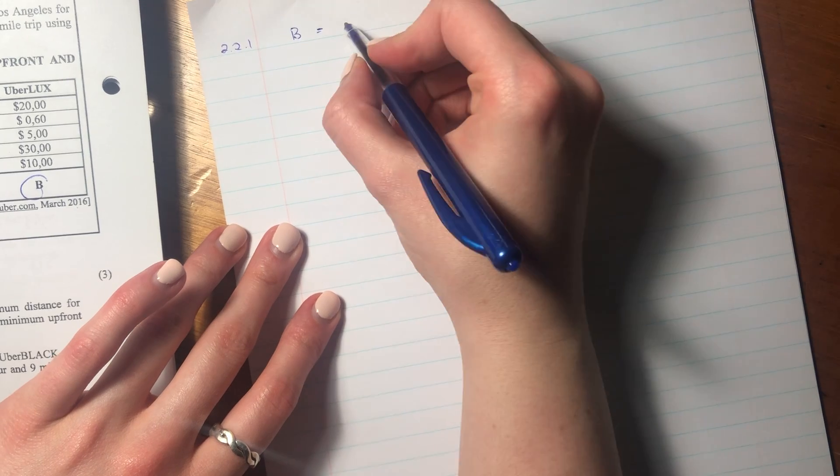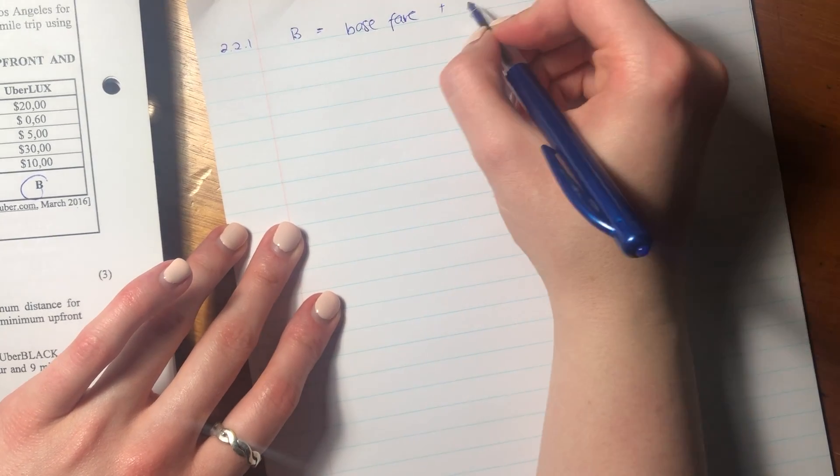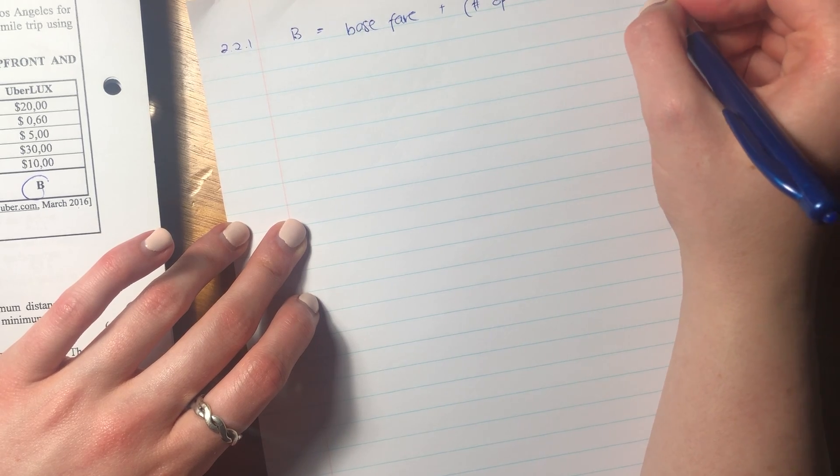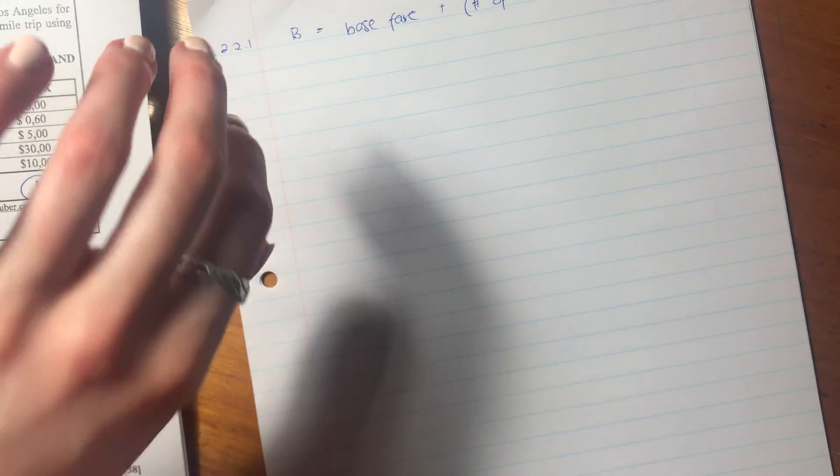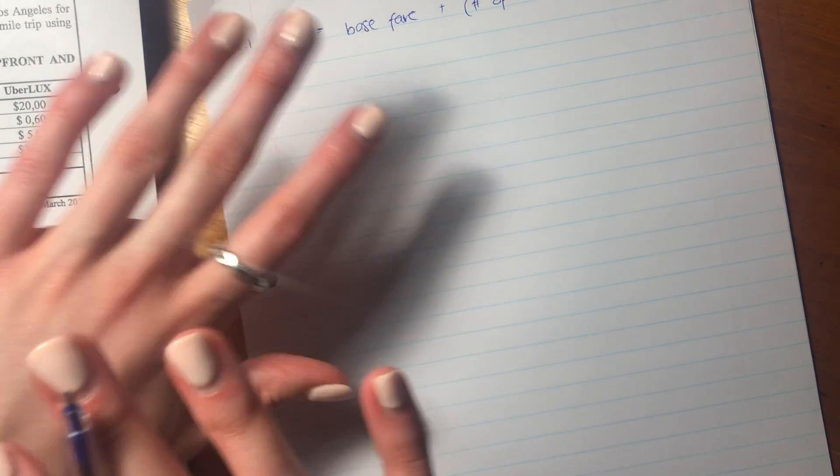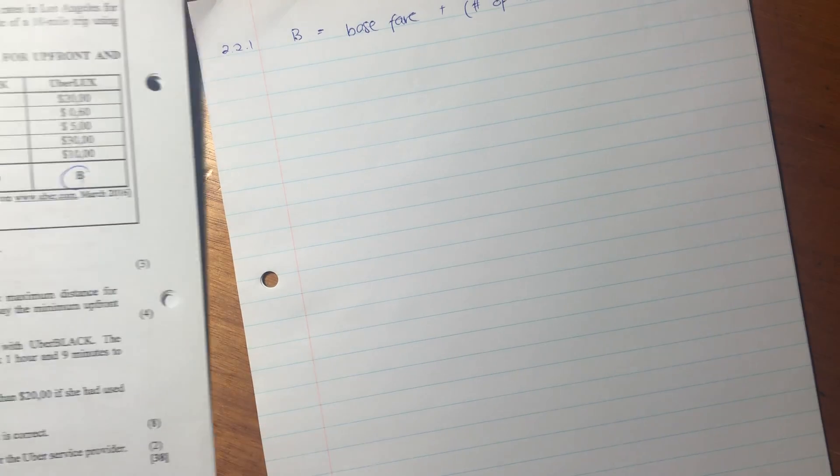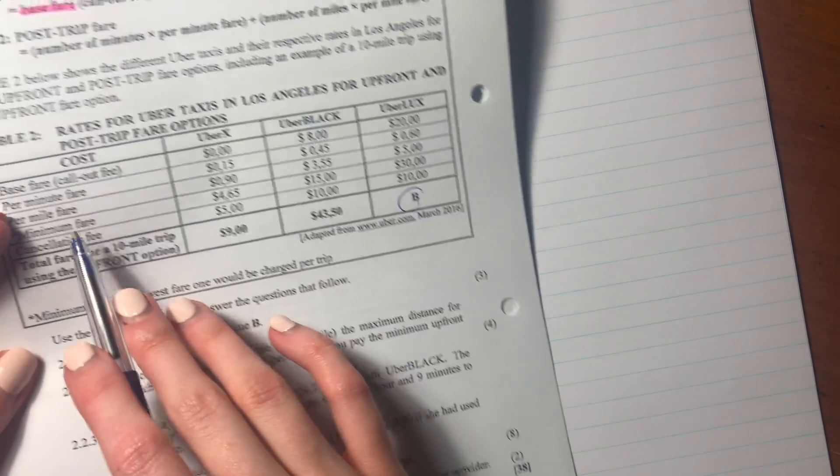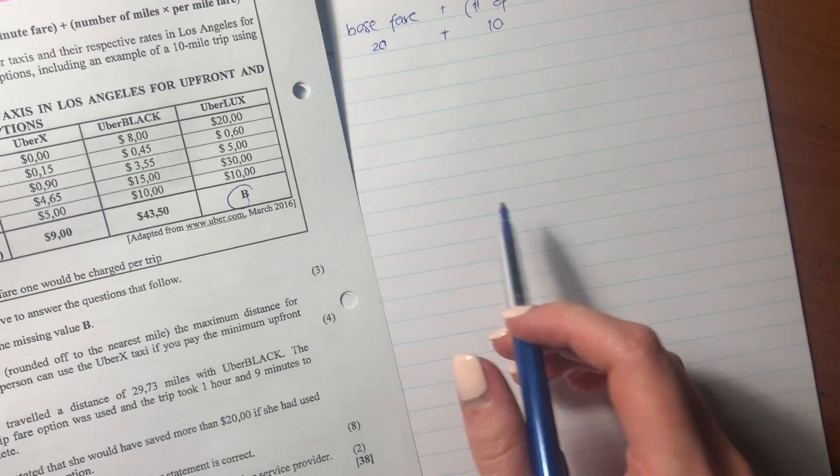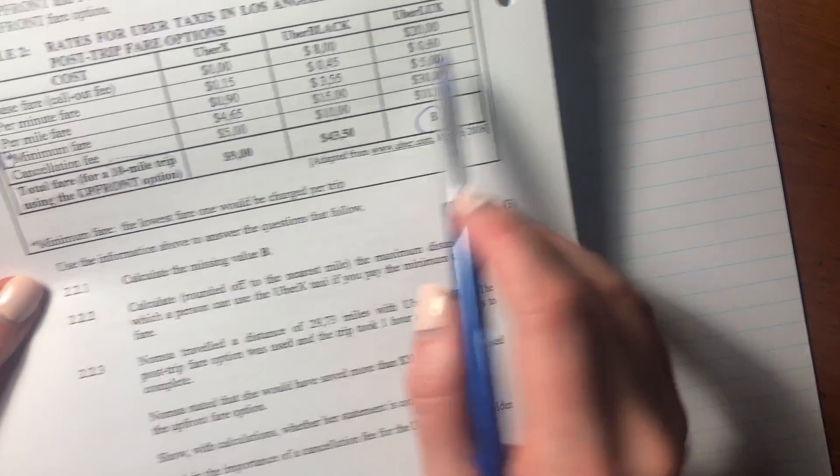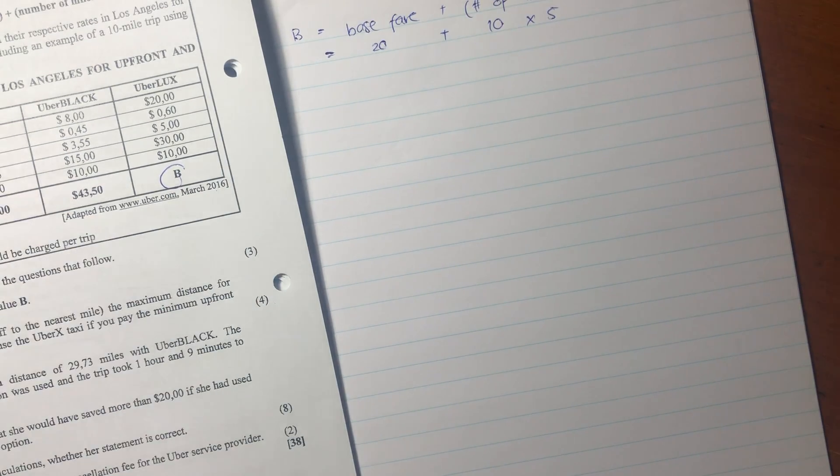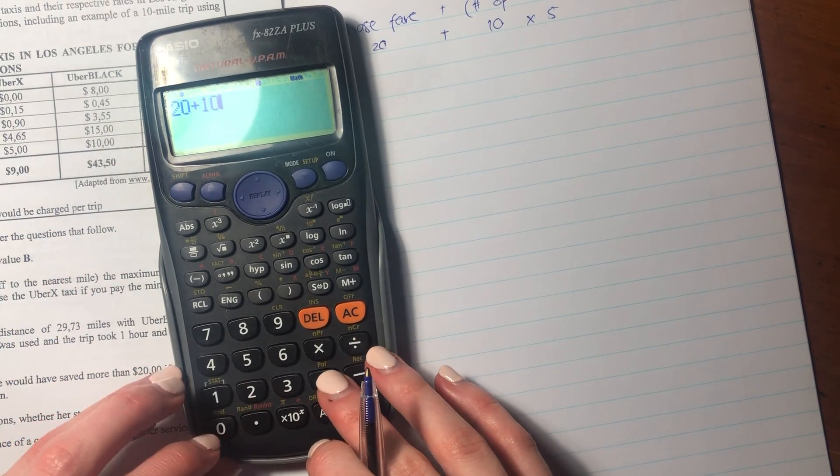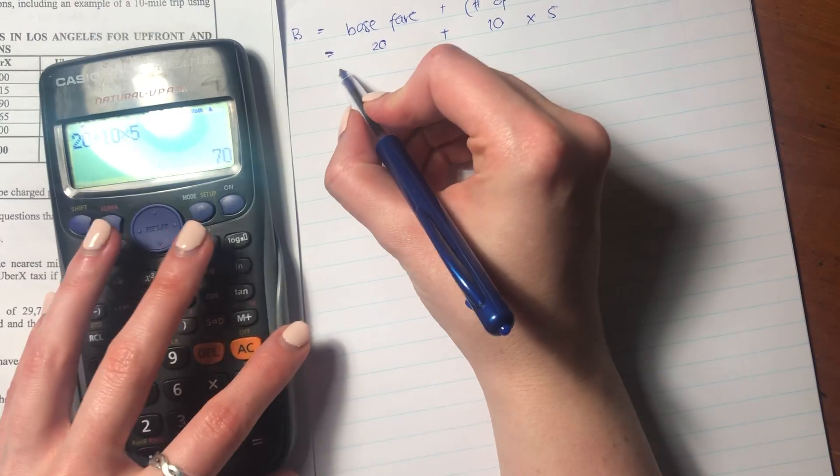So B equals the base fare plus number of miles times the per mile fare. I'm literally just rewriting the formula. So don't get super angsty or anything about that. Just rewrite what they've written. Then let's go look. What's the base fare here? Base fare is 20. What is the number of miles? Well, they've said it's a 10-mile trip, so it's going to be 10. Then it says the per mile fare. The per mile fare is 5. So that basically is what we have to type into our calculator to get an answer. So it'll be 20 plus 10 times 5. So it's going to be 70.